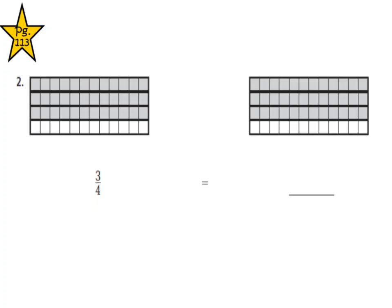Let's look at page 113, number two. We have a fraction — three-fourths. They have a model here that they want us to use to represent three-fourths. I'm going to draw lines to help us see the fraction better. I need four equal parts. Here are my four equal parts — one, two, three, four — and three of those equal parts are shaded. So this is representing three-fourths.